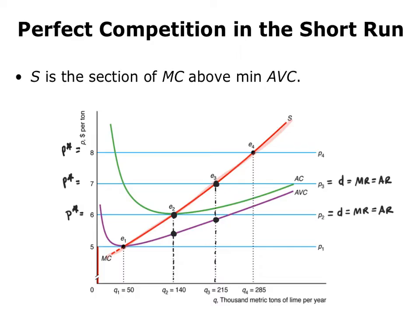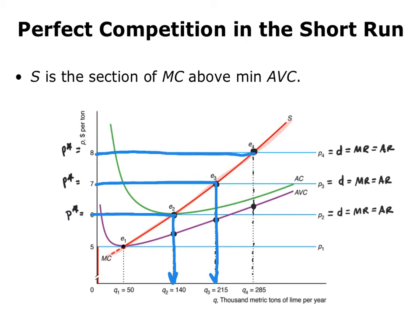If the price is $8, the firm's demand will be horizontal at $8 and equal to both marginal revenue and average revenue. If the firm chooses to stay open, it will produce a quantity of 285 units. At this quantity, the firm will stay open because average revenue is more than enough to cover average variable cost. What I'm trying to show you is that at any one of these prices — $6, $7, or $8 — marginal cost is doing the job of supply. At every price, we go to marginal cost and down to get the quantity that the firm will sell in order to maximize profit. Marginal cost is what's telling us the quantity the firm will supply to maximize profit.